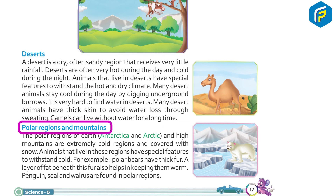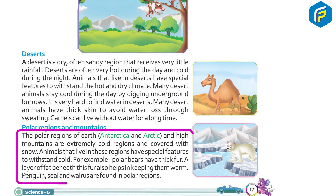The polar regions of Earth — Antarctica, Arctic — and high mountains are extremely cold regions covered with snow. Animals that live in these regions have special features to withstand the cold. For example, polar bears have thick fur, and a layer of fat beneath this fur also helps in keeping them warm. Penguins, seals, and walruses are found in polar regions.